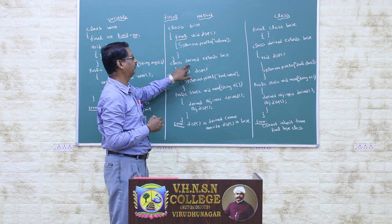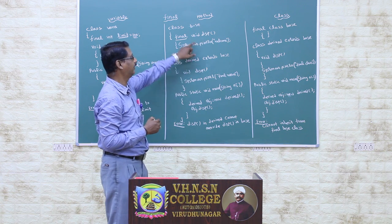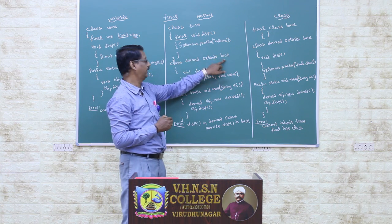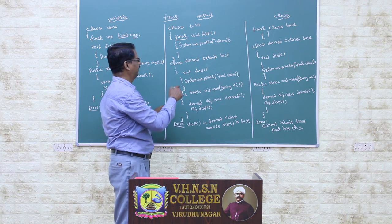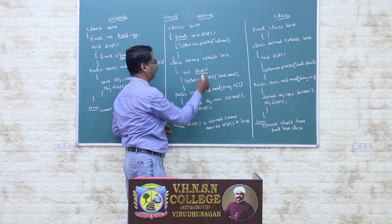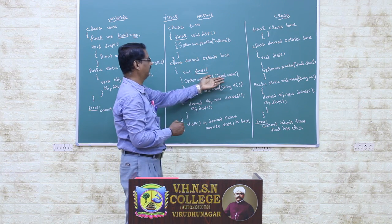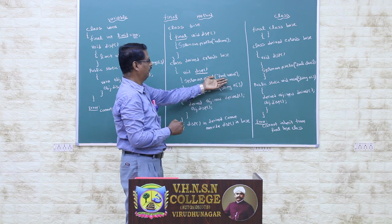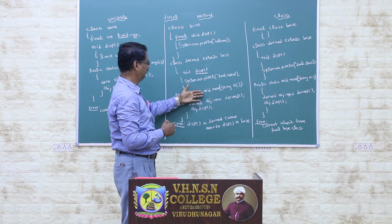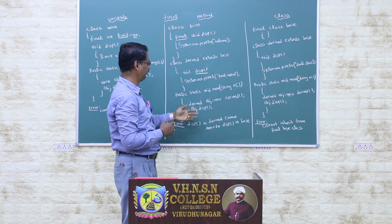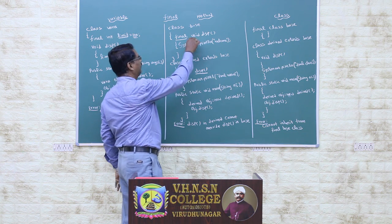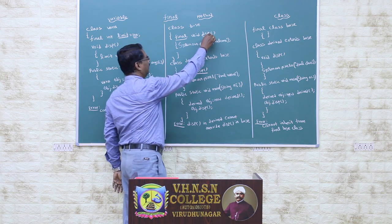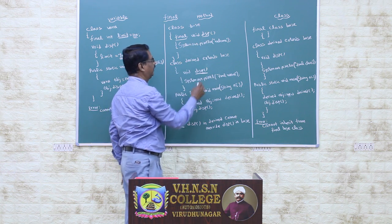Next, we have a derived class that extends the base class. So, if you have a final method in the base class, and in the main class you try to apply or override that method — such as the display method — you will see an issue.